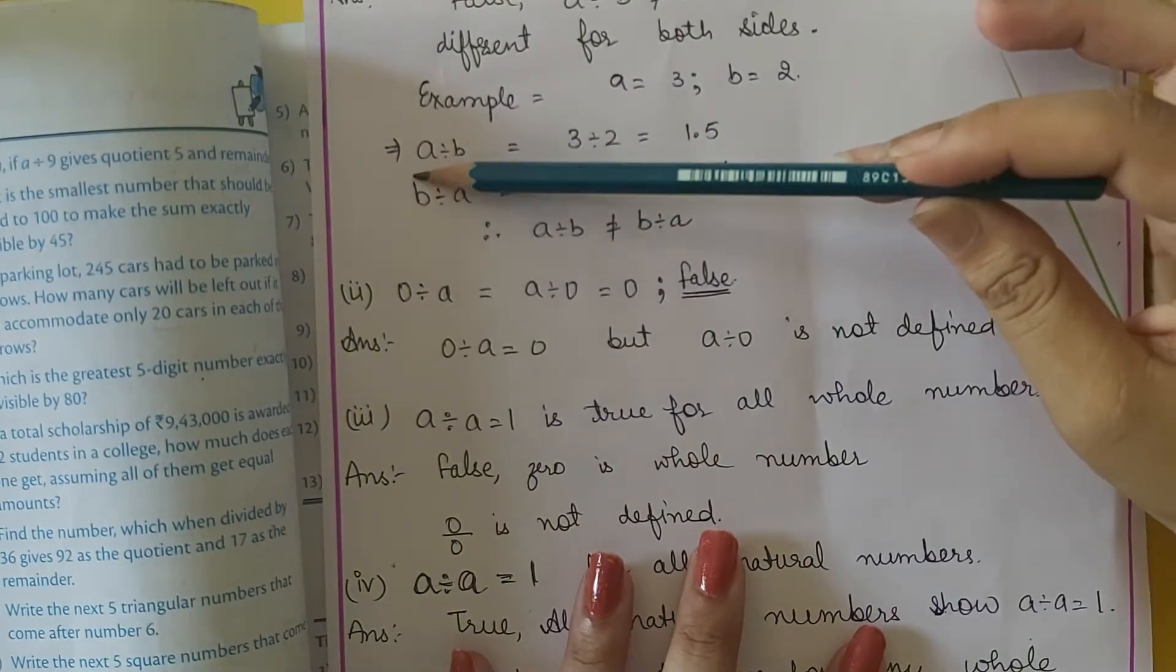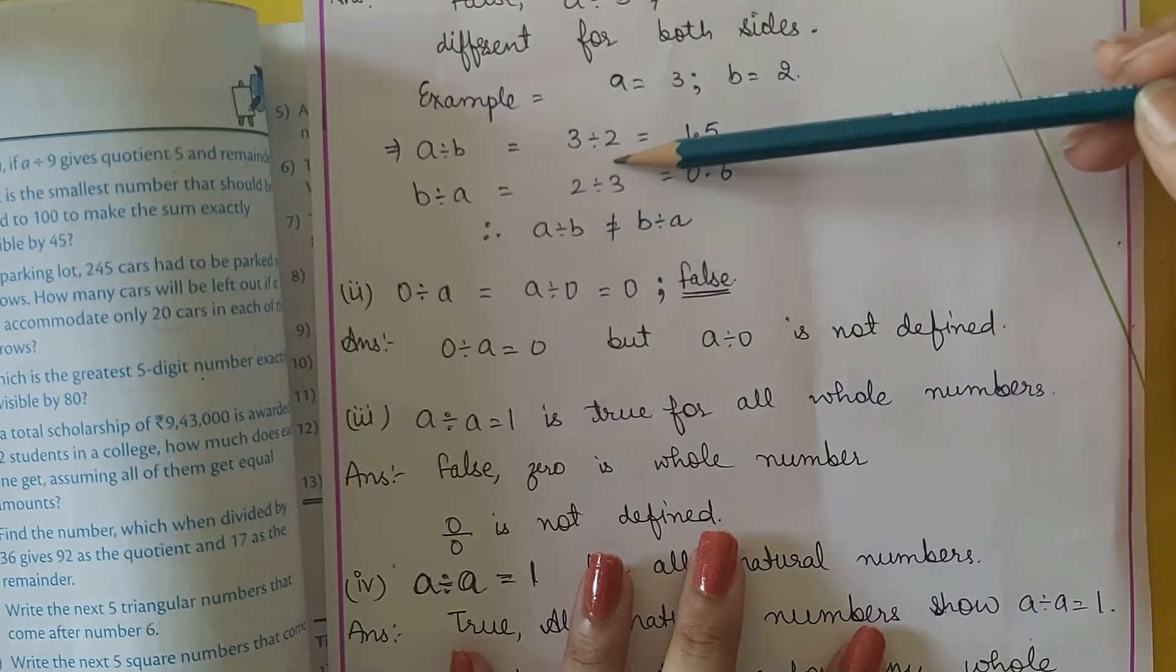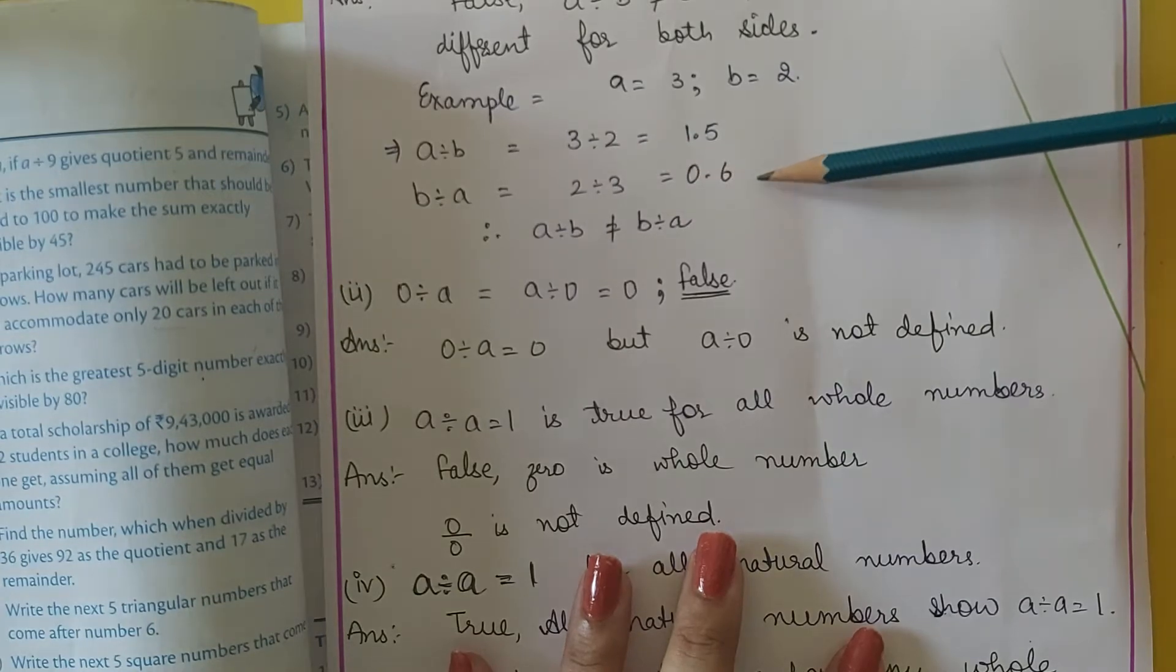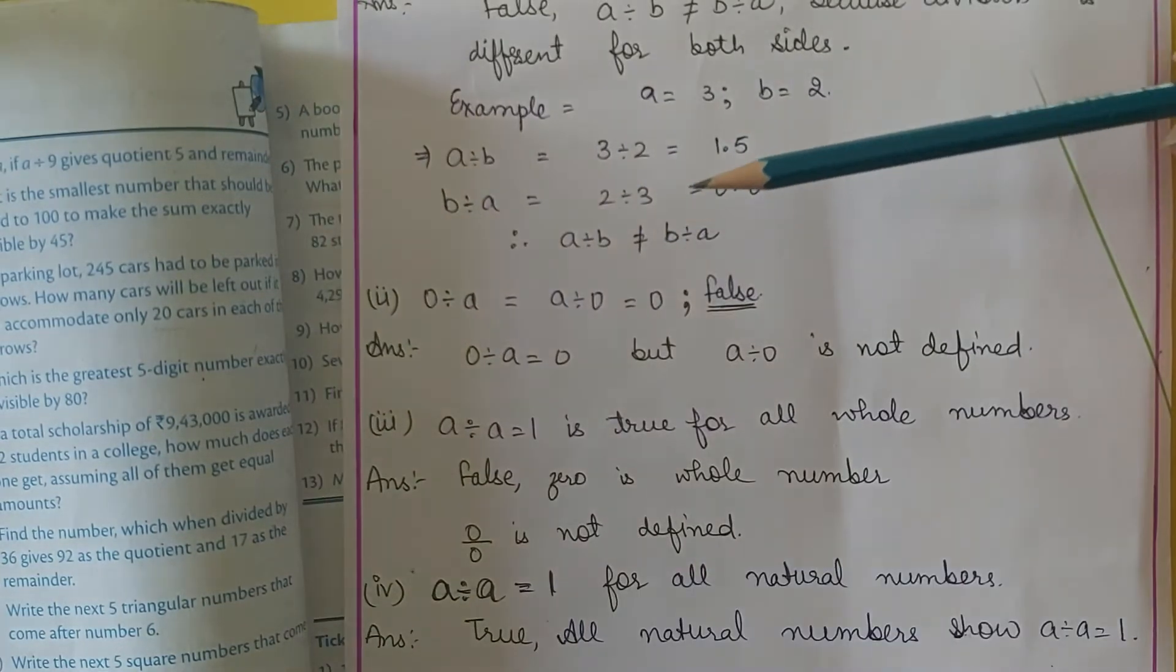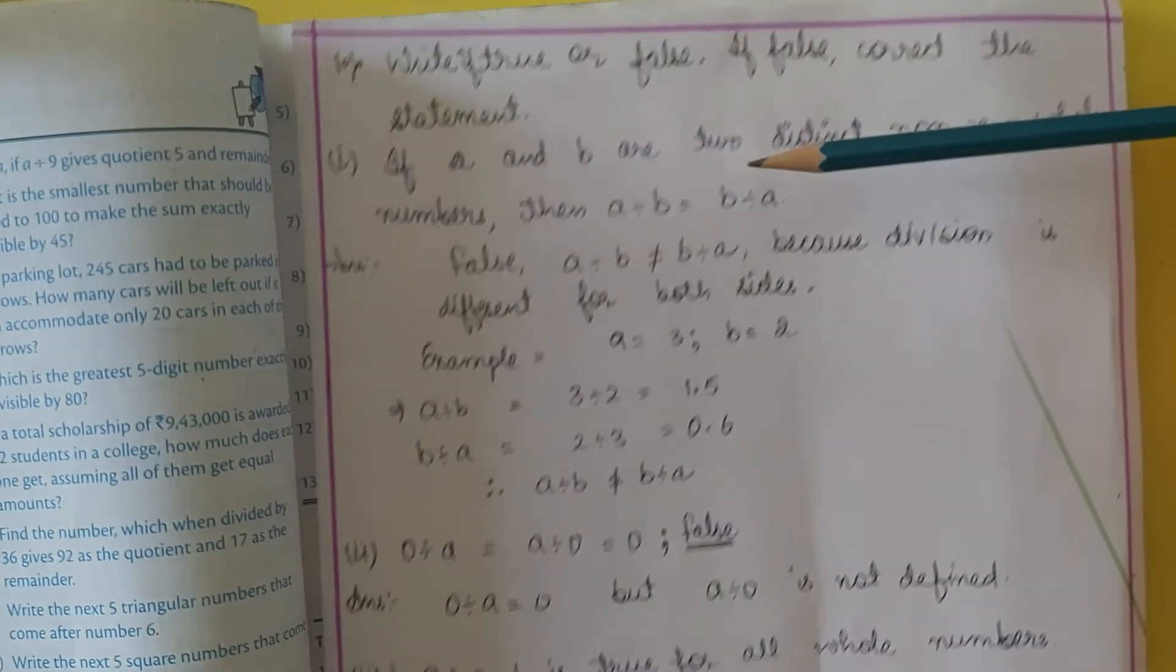On the other hand, B divided by A equals 2 divided by 3, that is 0.6. So this statement given in the first question is false.